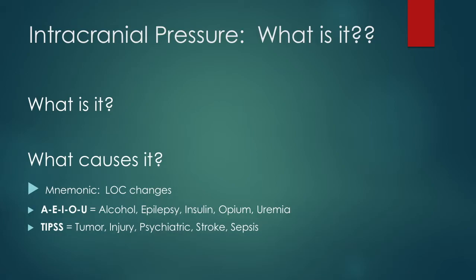So what is increased intracranial pressure? Clearly, it's just the pressure in the skull. Our skull is actually a rigid box, and it's made of blood, brain, and CSF. All of these things together form what they call the Monroe-Kelly hypothesis. So if any one of those things creates an added pressure or goes up or down at all, the others have to adjust to avoid increased intracranial pressure.